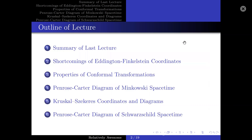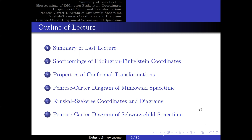The outline of this lecture is as follows. First, we will give a brief summary of what we have learned in the last lecture. Then, we will explore what goes wrong with Eddington-Finkelstein coordinates. Next, we will refresh our memory of some properties of conformal transformations, as they will be crucial in helping us develop an understanding of Penrose-Carter diagrams. Afterwards, we will draw the Penrose-Carter diagrams for Minkowski spacetime. Thereafter, we will introduce Kruskal-Szekeres coordinates and use these coordinates to draw Kruskal-Szekeres diagrams, which are maximally extended geometries for the Schwarzschild metric. And finally, we will use conformal transformations to convert Kruskal-Szekeres diagrams to Penrose-Carter diagrams for Schwarzschild spacetime.